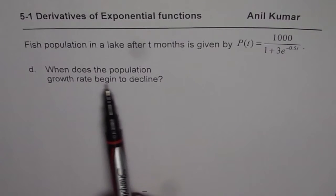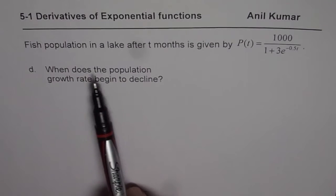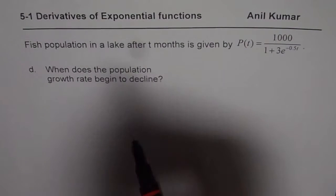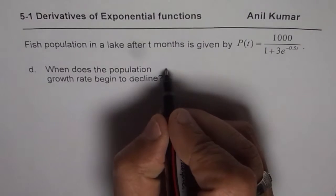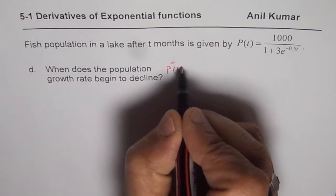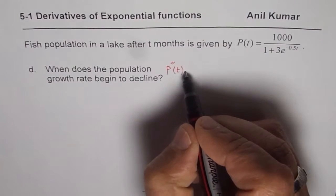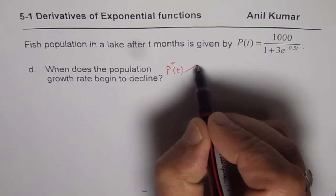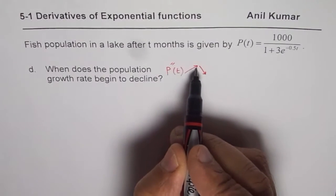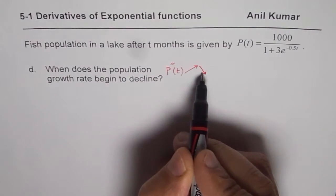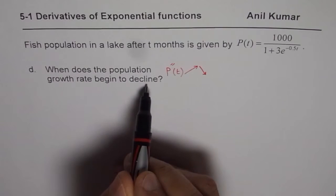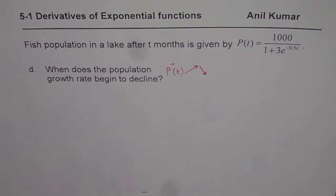What is the concept here? When does the population growth rate begin to decline? Basically, what it means is we will find the second derivative. Decline means first it should be increasing and then decreasing. So when the second derivative starts decreasing, the population growth rate begins to decline. That is the concept.